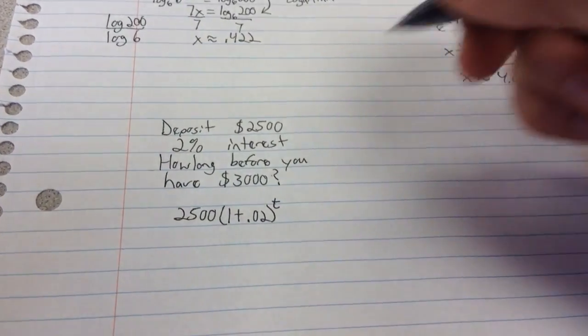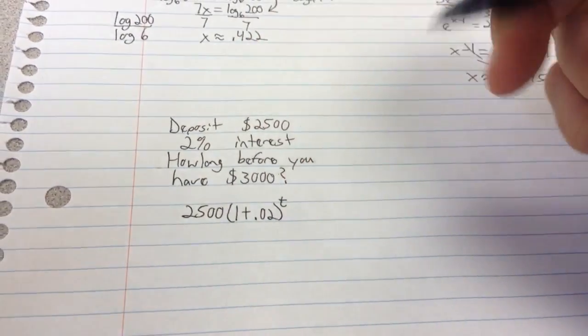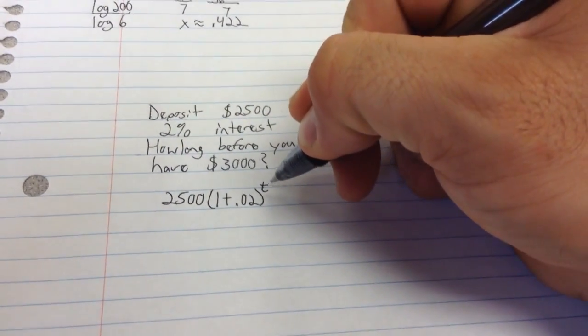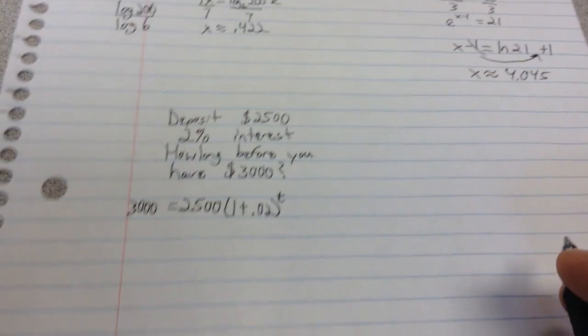This is a little different. This is when I have given you how long before you have $3,000. I'm asking you to solve for t. So what I'm asking you to do is to set this equal to $3,000 and find the value of t.